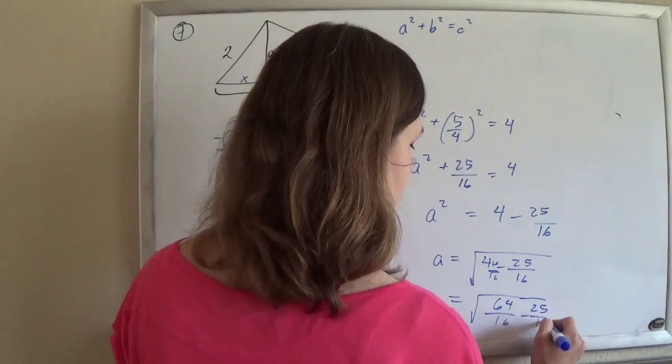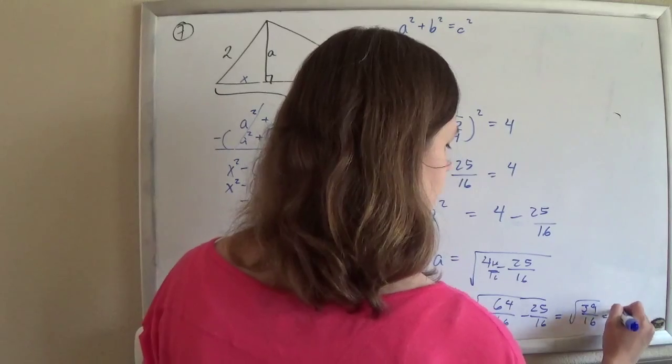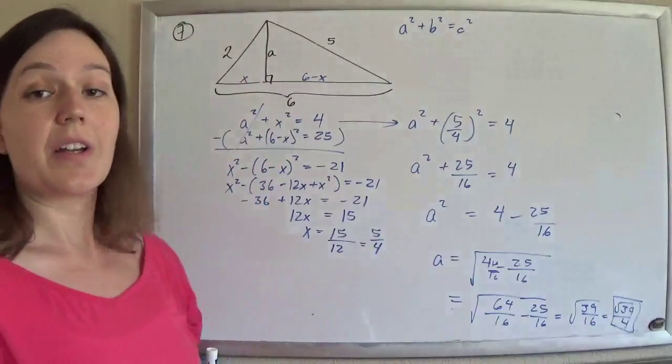16ths minus 25 16ths. So that's the square root of 39 16ths. So the square root of 39 over 4. And that is what you wanted to know.